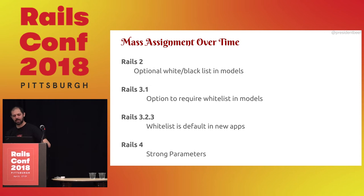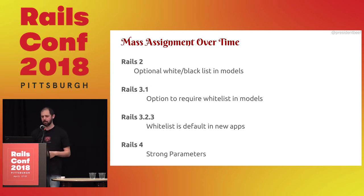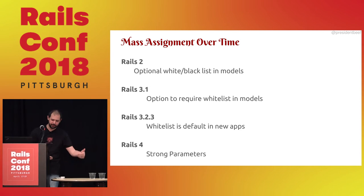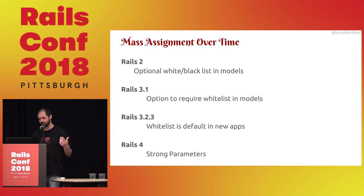Mass assignment over time: Rails 2 let you whitelist or blacklist in the model using attr_accessible and attr_protected. Rails 3.1 let you force all models to have a whitelist. In Rails 3.2.3, if you generated a new app, you'd get that by default. And then Rails 4 gave us strong parameters.